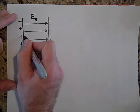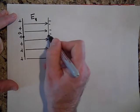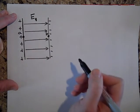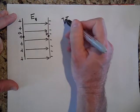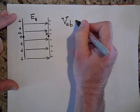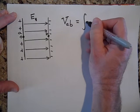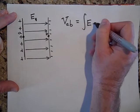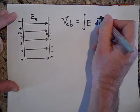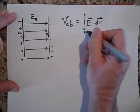Now, if I want to find the voltage at A with respect to B, the voltage at A with respect to B, that's what I'd like to find. That's just going to be the path integral of E dot DR from A to B.